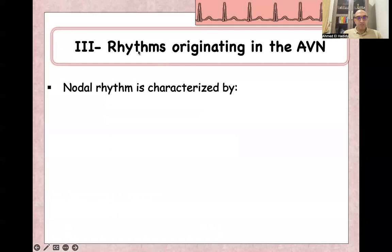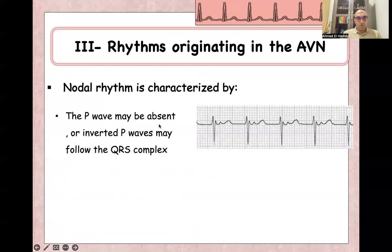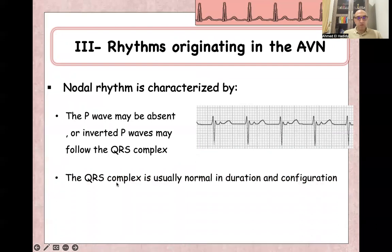The third classification is rhythms originating from the AV node itself. Nodal rhythm is characterized by a P-wave that is absent or inverted, and may even come after the QRS complex. The QRS complex is usually normal in duration and configuration, because nodal rhythm distributes electrical activity to the right and left bundle branches simultaneously. The most important characteristic is that the P-wave might be absent, negative, or come after the QRS complex.